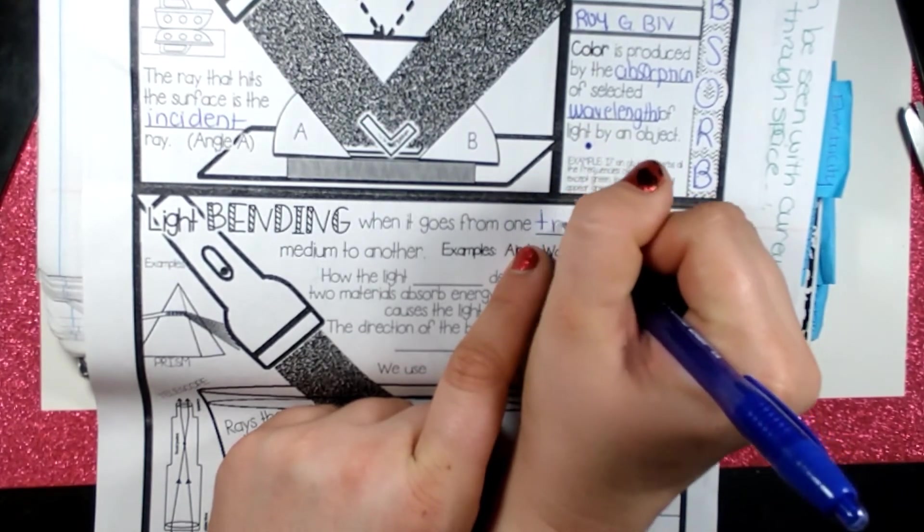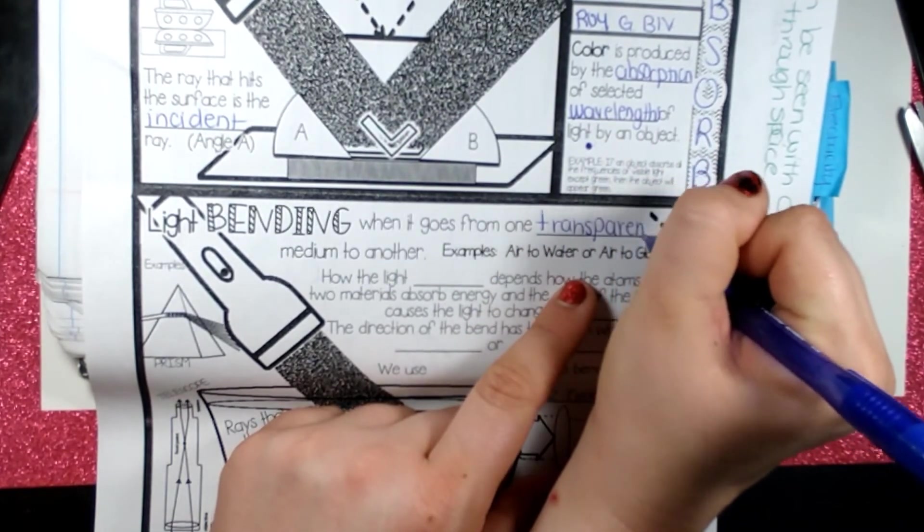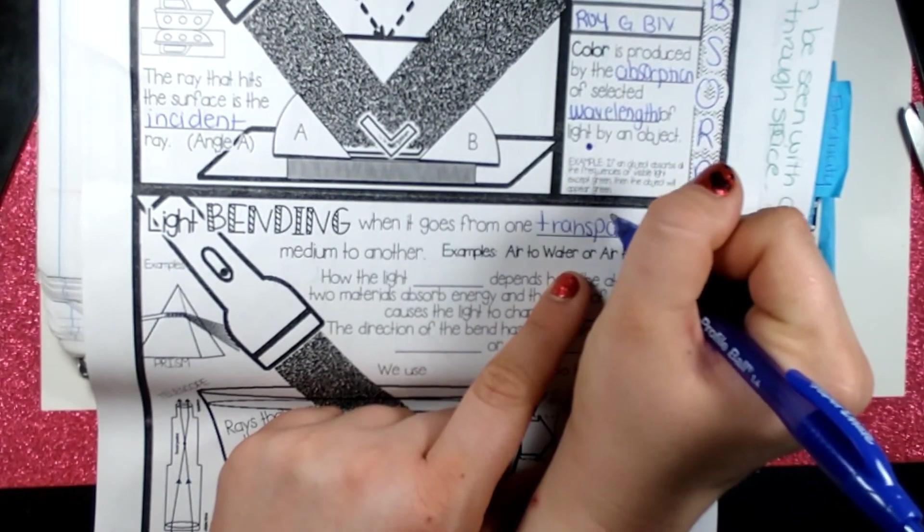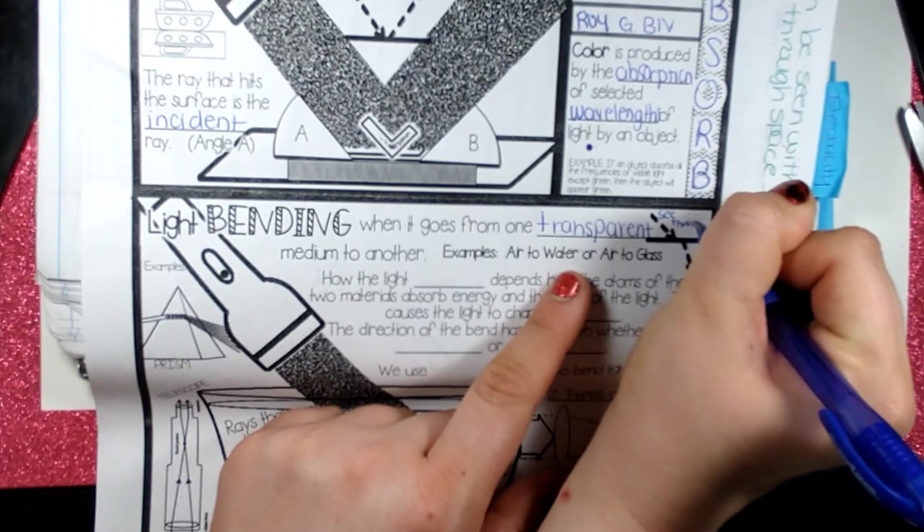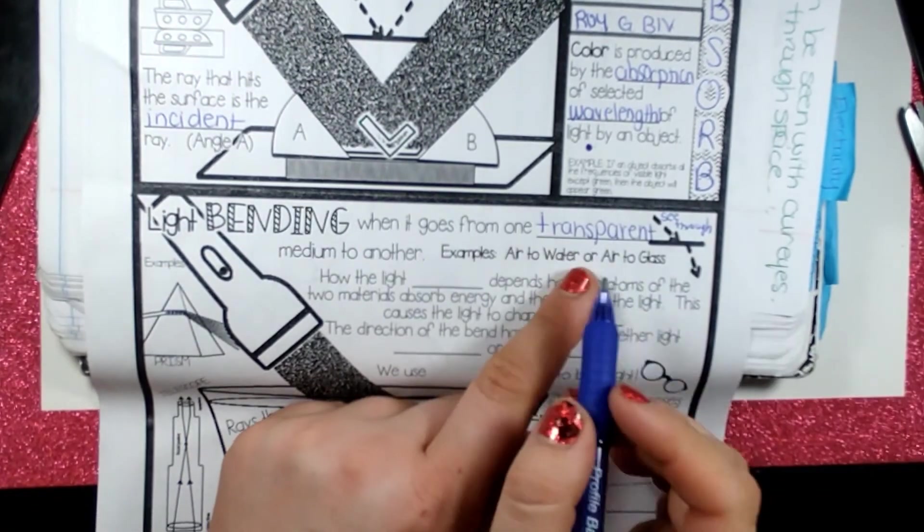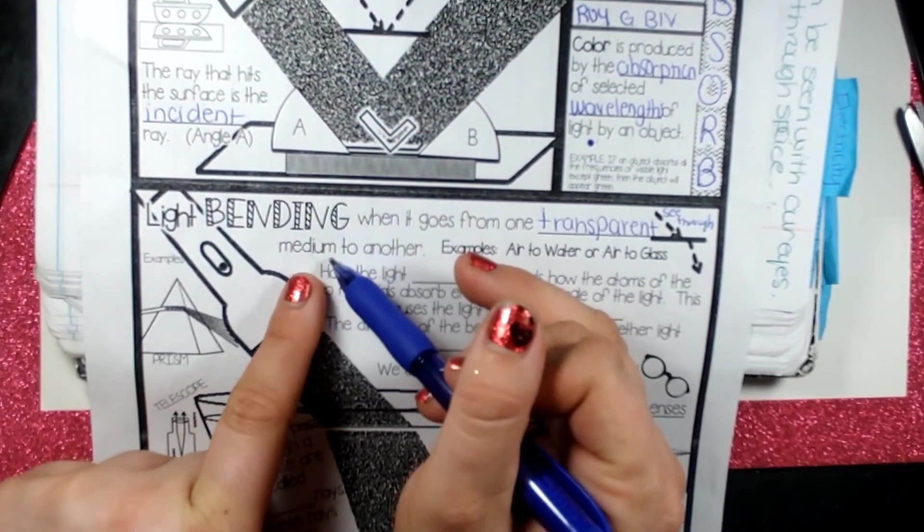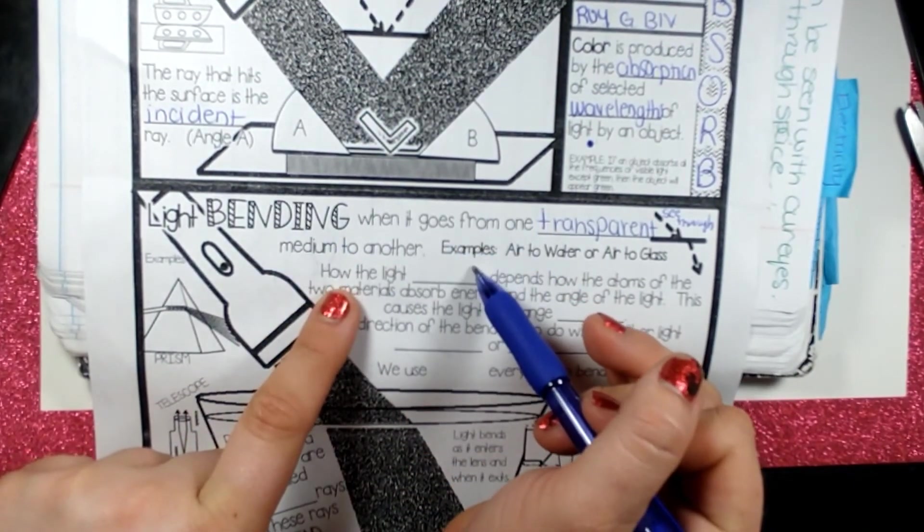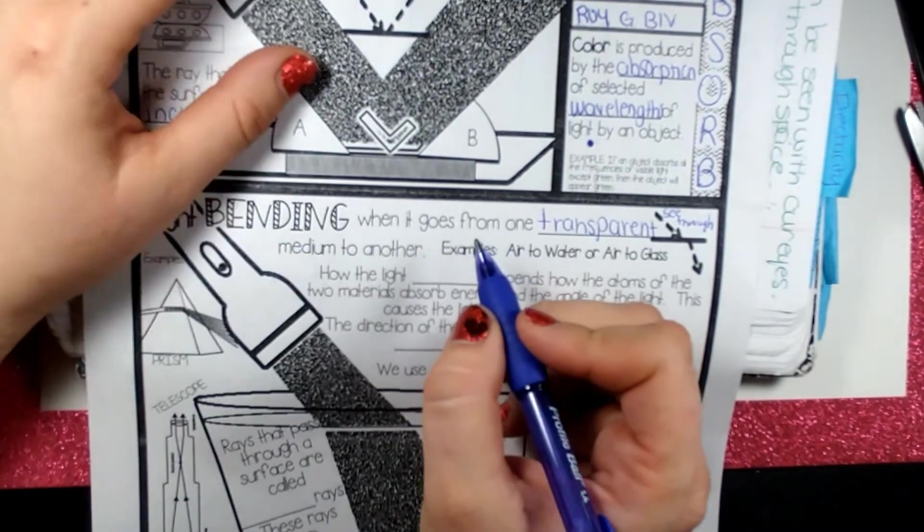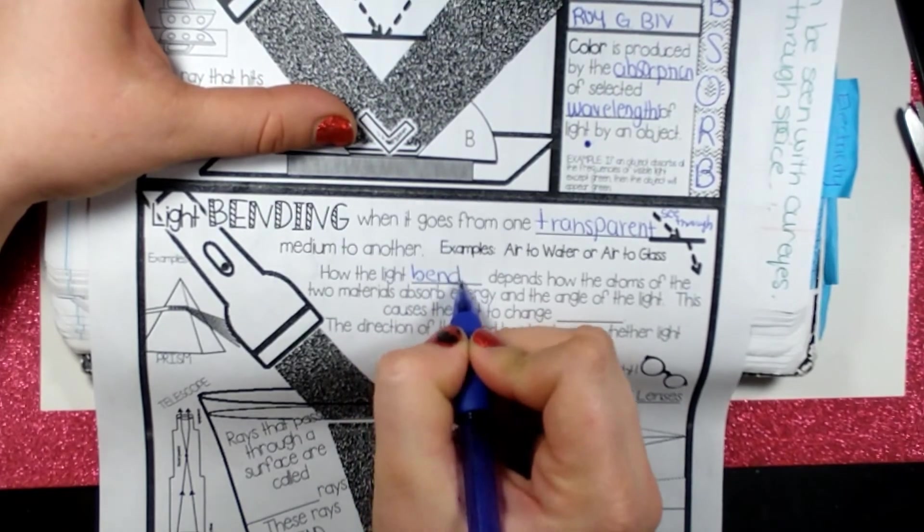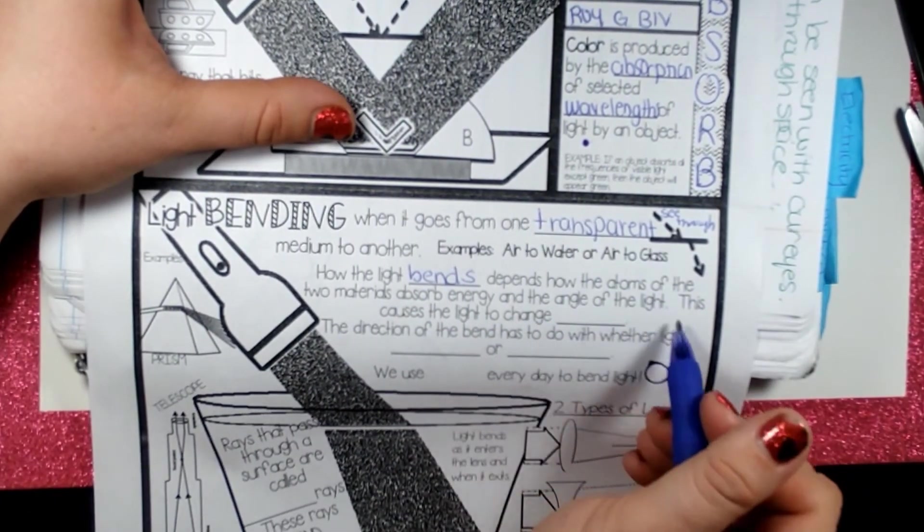So when we go from one transparent medium to another. Now a medium is a material. Transparent means see-through. Okay, see-through. So you go through one transparent medium or material to another. Okay, like air to water or air to glass. The light will bend depending on how the atoms of the two materials absorb the energy and the angle of the light.